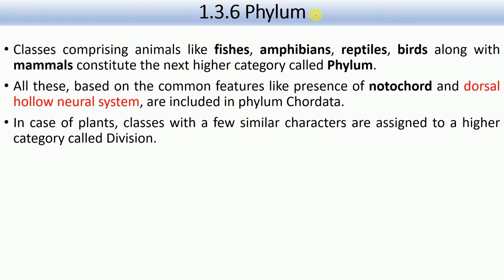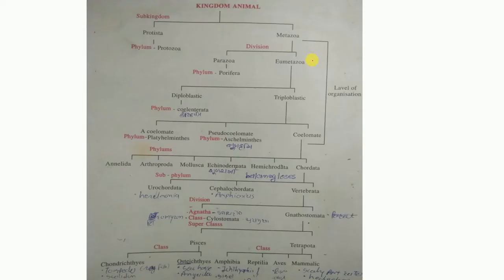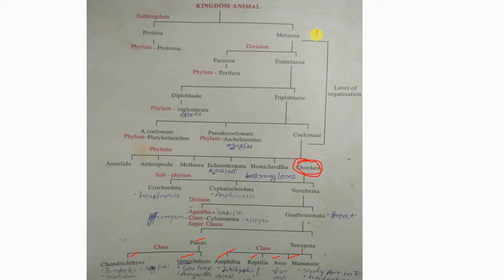Now let's move on to the next category: phylum. Phylum is a group of classes. For example, fish, Amphibia, reptiles, and birds all fall under one phylum. Phylum Chordata includes Amphibia, Reptilia, Aves, Mammalia, Chondrichthyes, and Osteichthyes — they all fall under phylum Chordata. This classification chart will be explained in detail in the upcoming chapter — chapter three, Animal Kingdom.